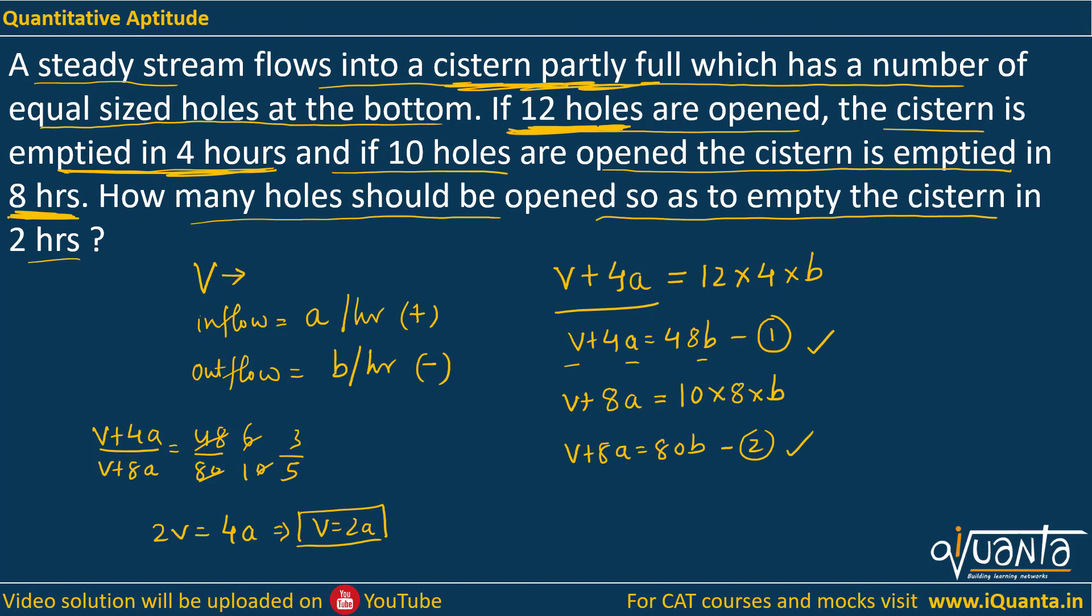Now I have a relation between V and A. As soon as I get this relation I can find out a relation between A and B. Let me put V equal to 2a here, so I will be getting 6a equals 48b. I can say A is equal to 8b.